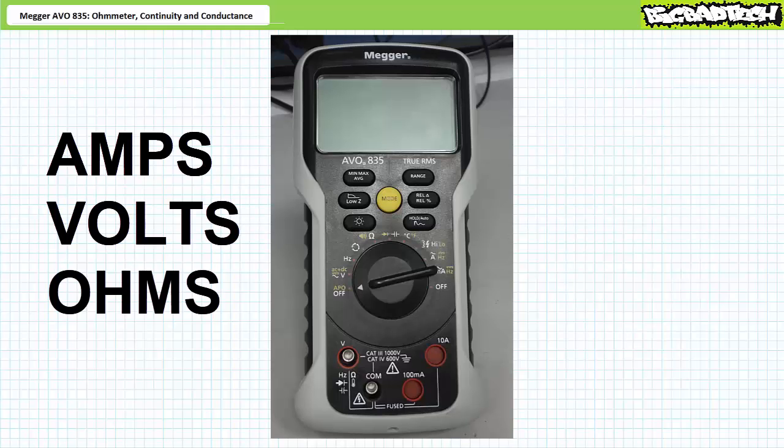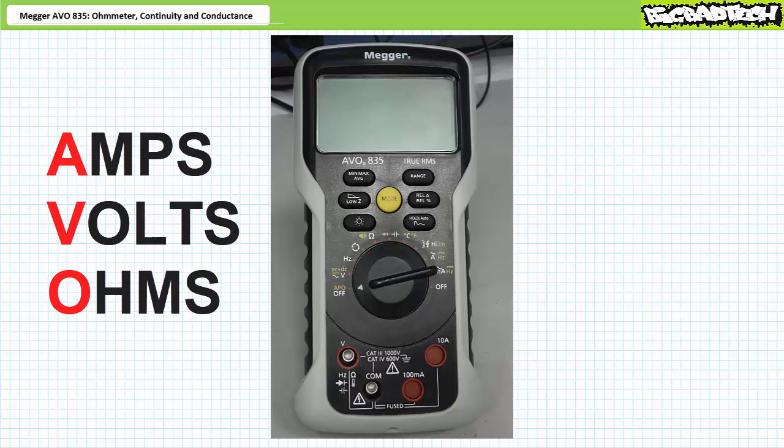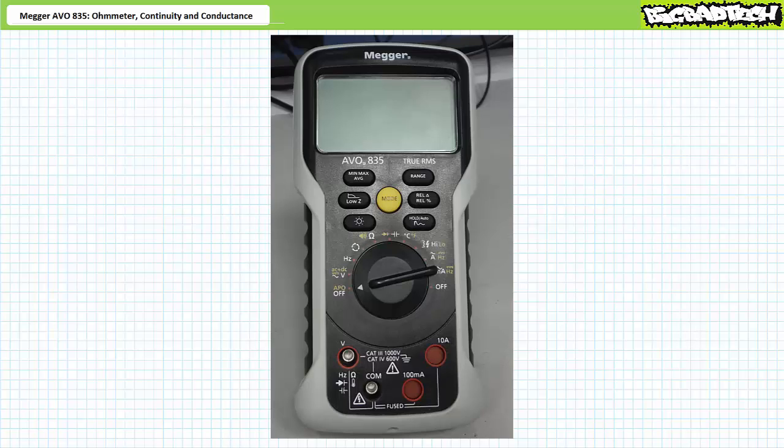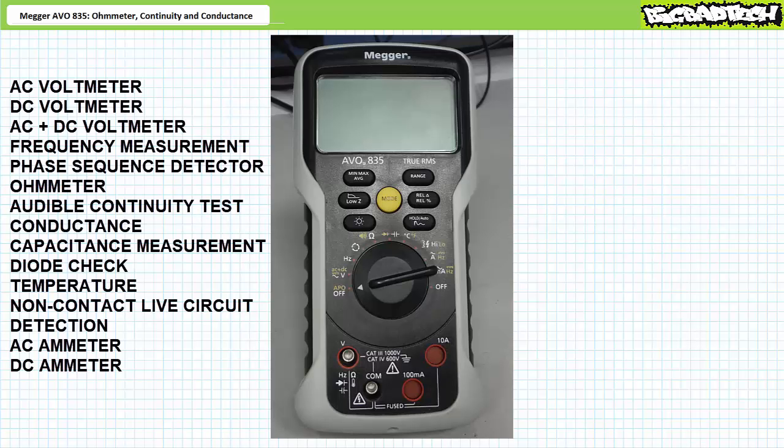Amps, volts, ohms - AVO. The Megger AVO digital multimeter is the one tool that does it all. The Megger AVO835 digital multimeter, as the name implies, features multiple test and measurement functions integrated into a single portable package, including but not limited to DC and AC voltage and current measurement, resistance, temperature, phase sequence detection, and more.